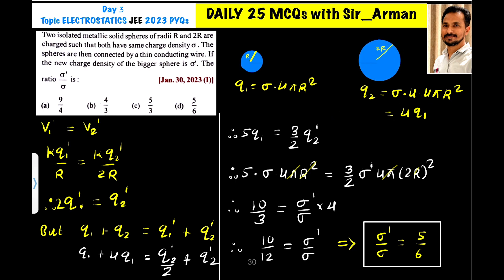If you compare with this, then the charge on sphere 2 is 4 times the initial charge. So right now they are not connected. If the charge on the first sphere is q1, then the charge on the second sphere is 4q1.